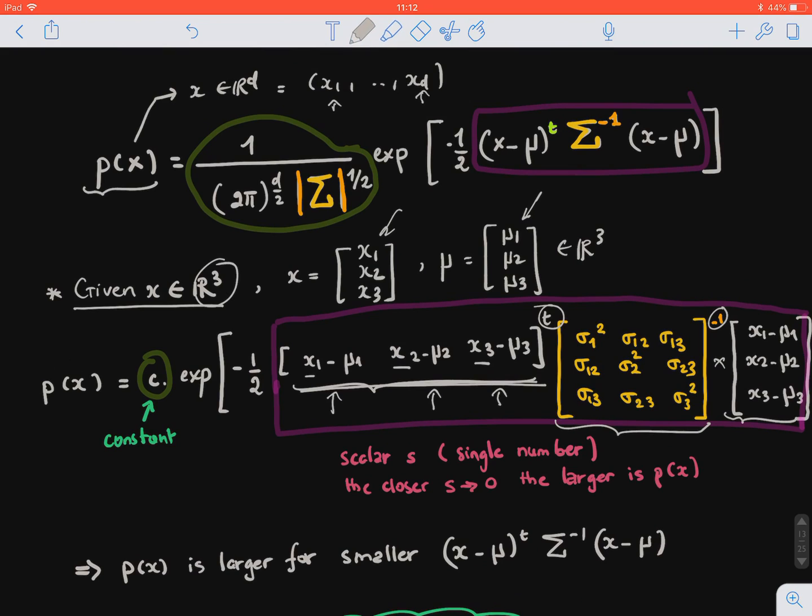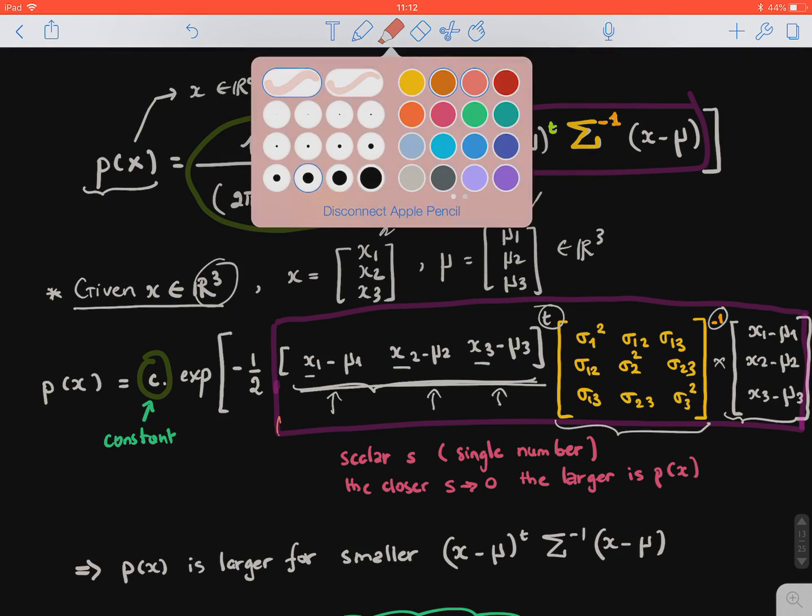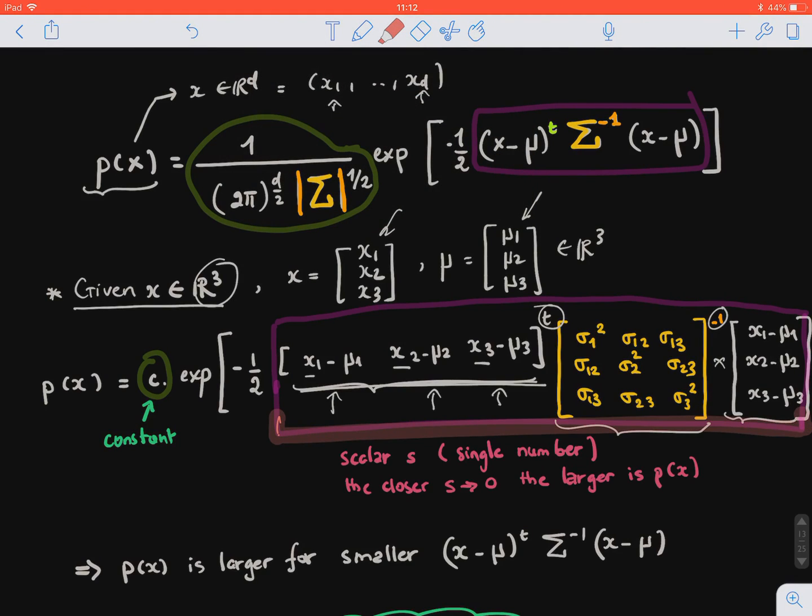So what do we notice here? There is an important quantity to compute the probability of observing x, so it's this one, so the dot product of (x - μ)ᵀ, guided by the covariance matrix.